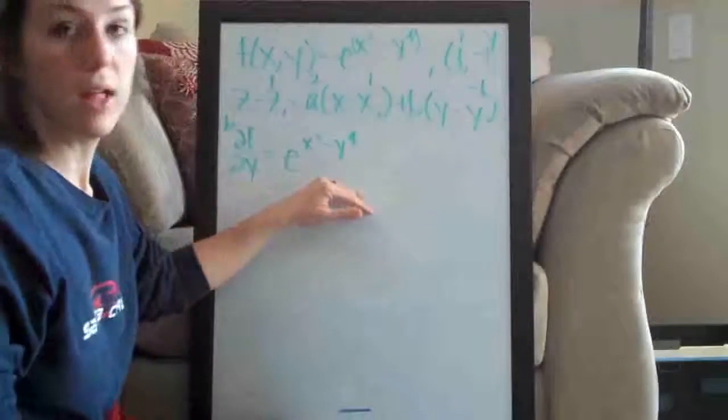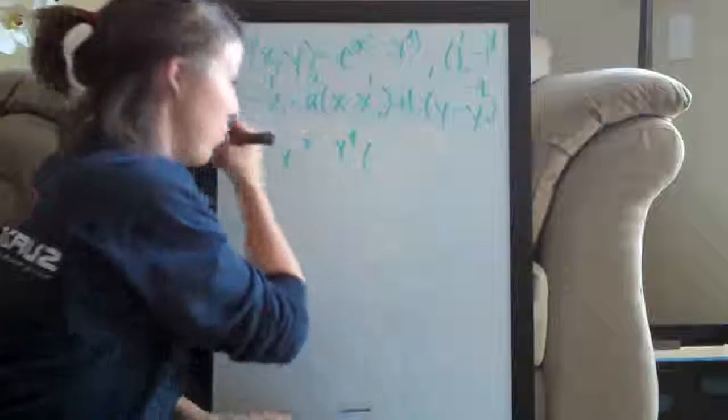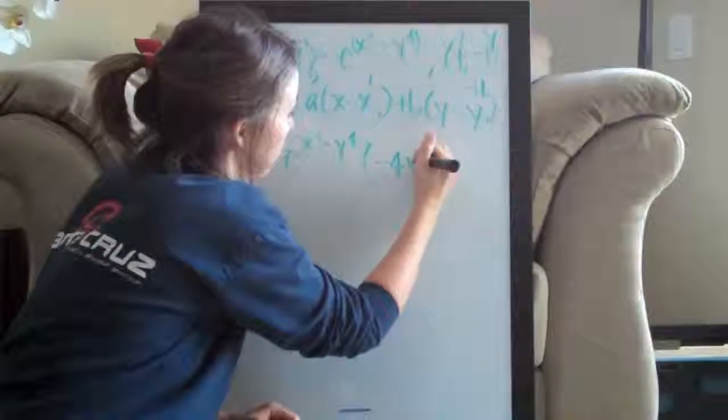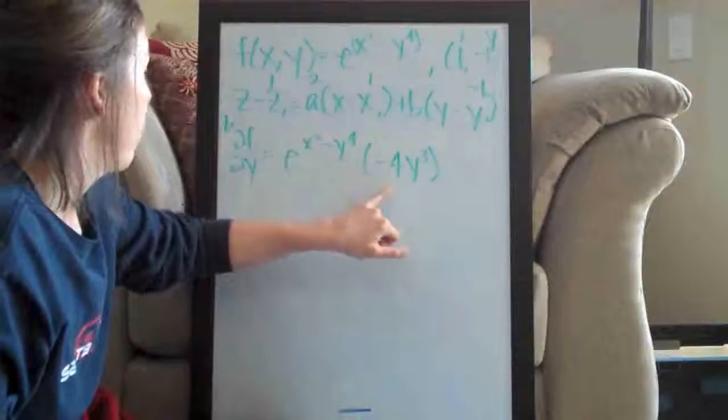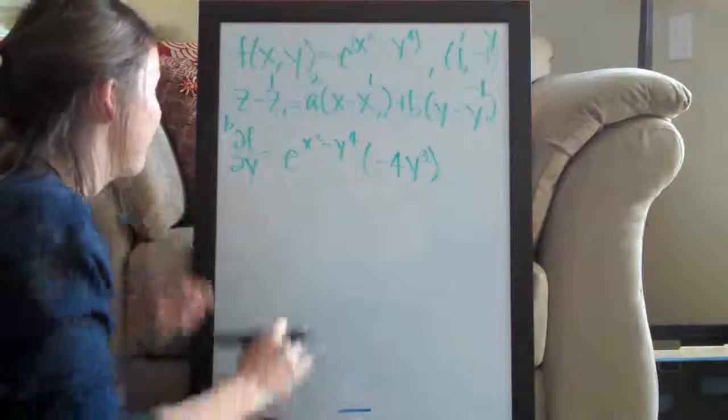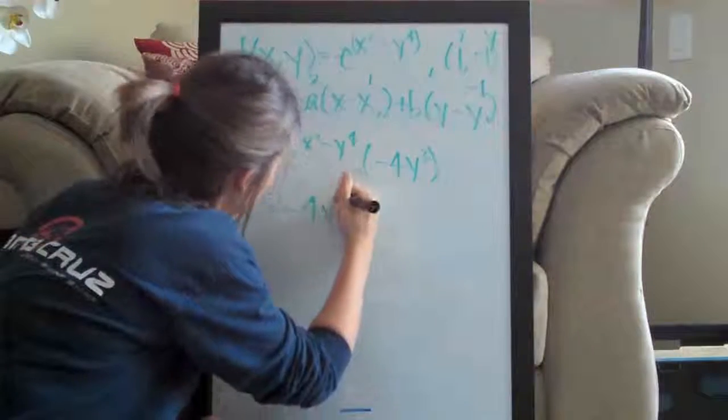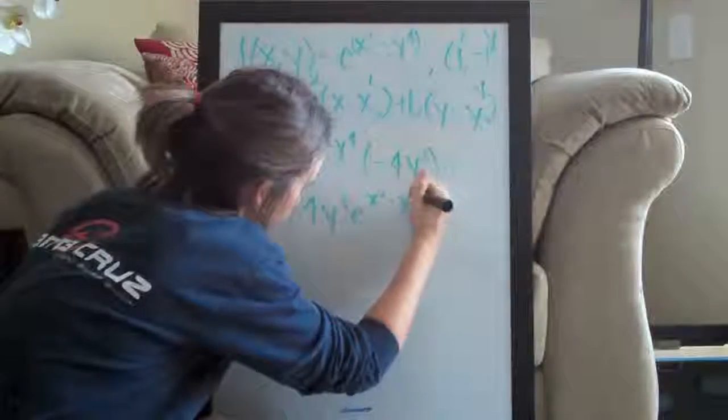But then we have to multiply by the derivative of the exponent with respect to y, which is going to be negative 4y cubed. So there is our partial derivative with respect to y. Let's go ahead and simplify: negative 4y cubed e to the x squared minus y to the fourth.